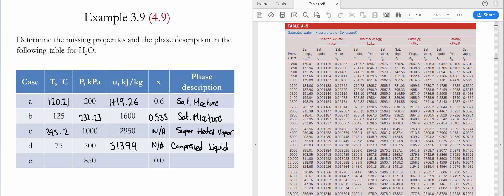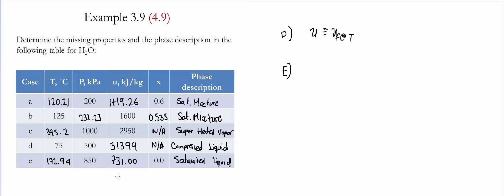For case E, the pressure is provided and quality is equal to zero. A quality equal to zero corresponds to a saturated liquid. We go to Table A5 since pressure is provided, and at 850 kilopascals, the temperature equals the saturated temperature of 172.94°C. The internal energy is the value of UF, which is 731 kJ/kg. These are the resulting values of temperature, pressure, internal energy, quality, and phase description for water.